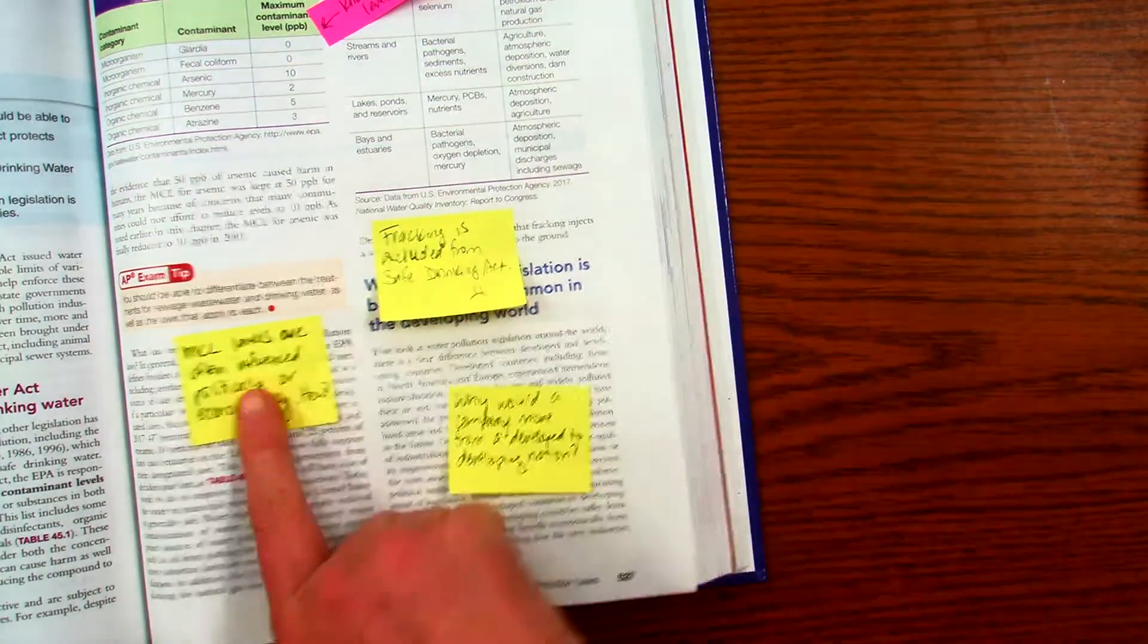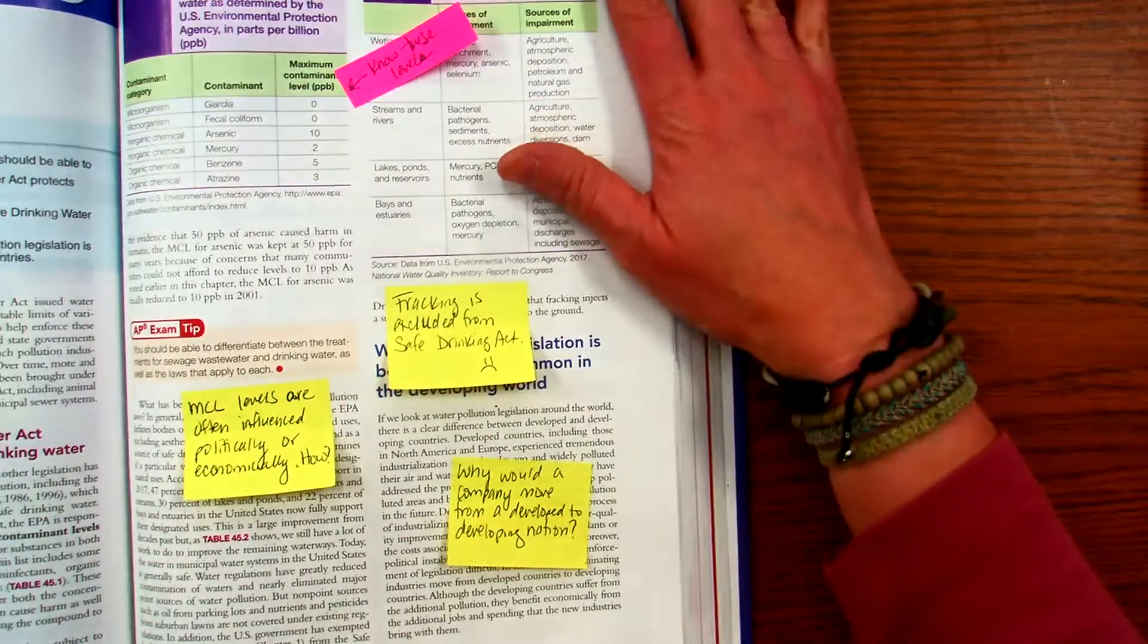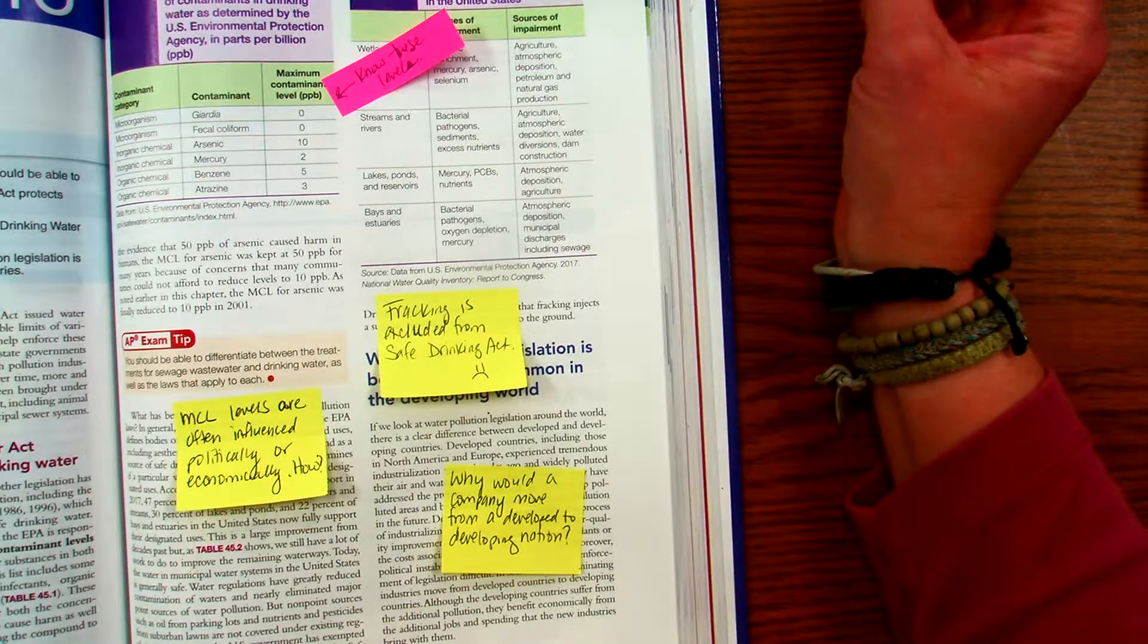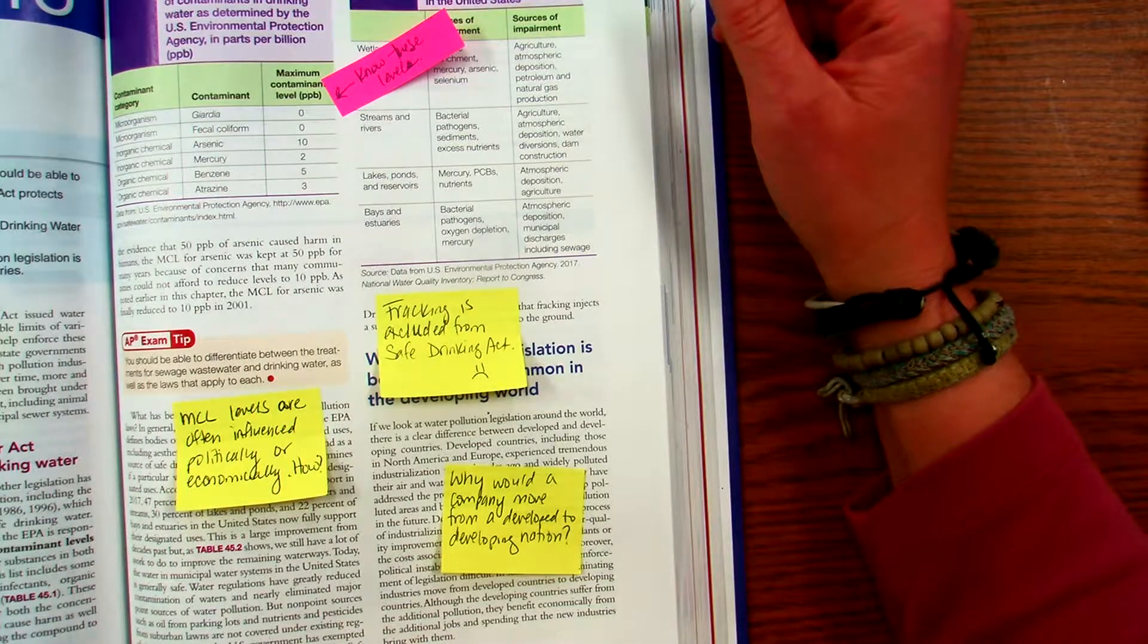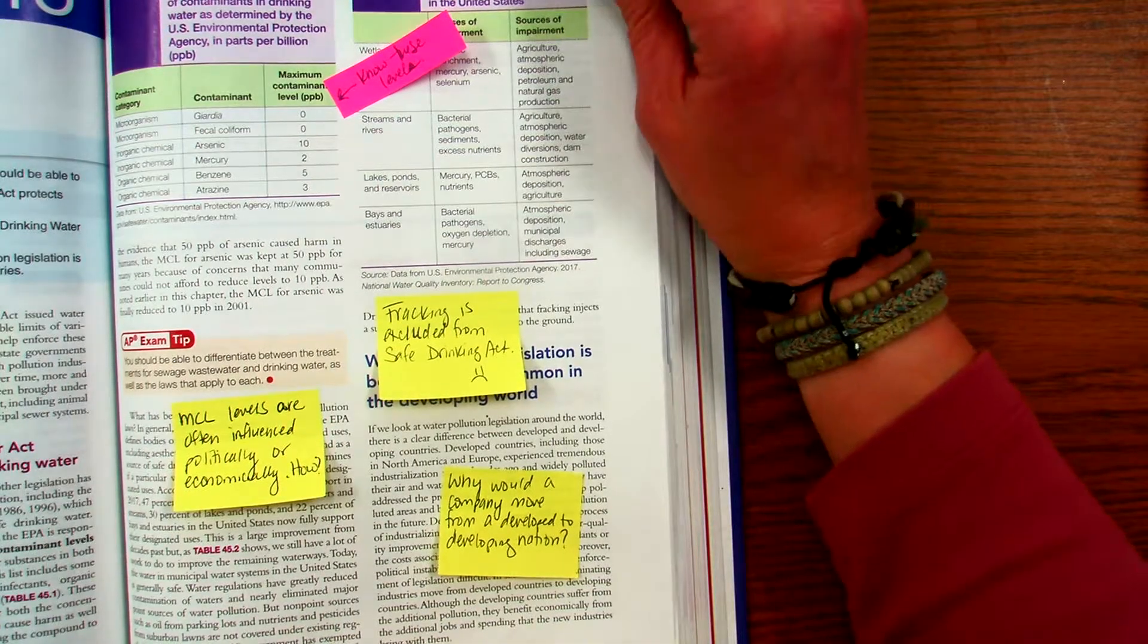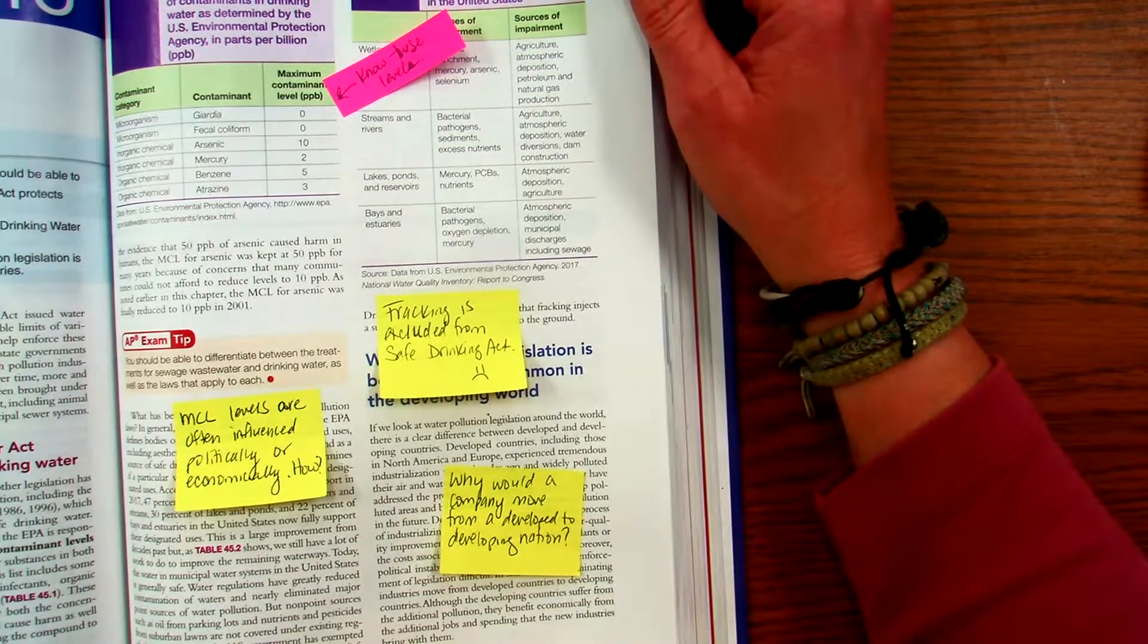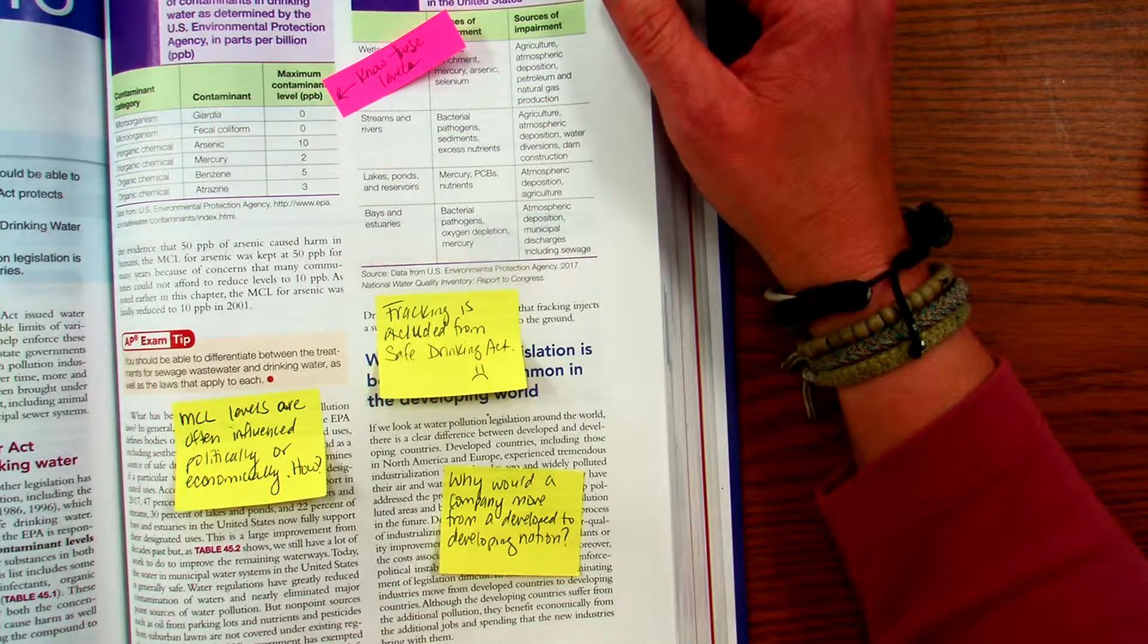And then these MCO levels, which are these up here, they basically are influenced—well, not all the time, but sometimes they can be influenced politically or economically, which is kind of disturbing, but how can they? So think about what would cause a government to kind of be more lenient, even though they know the toxicity level may be close to what they're allowing.